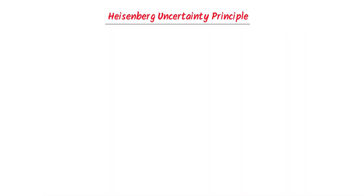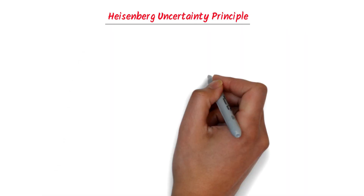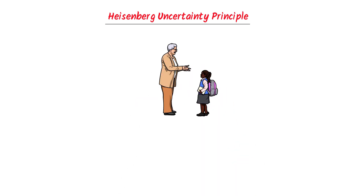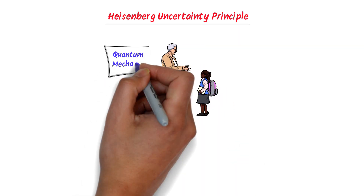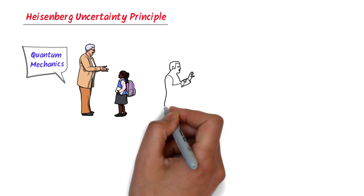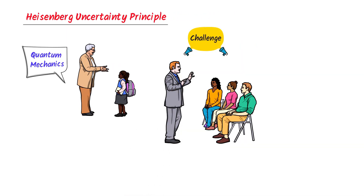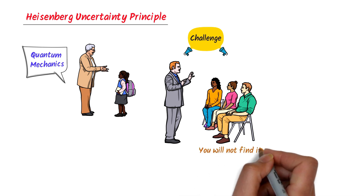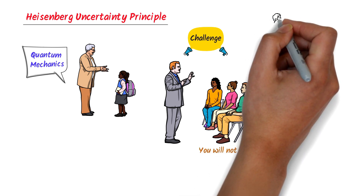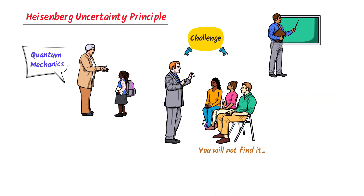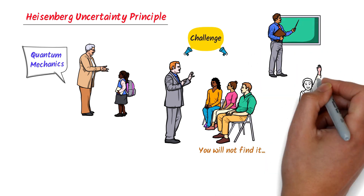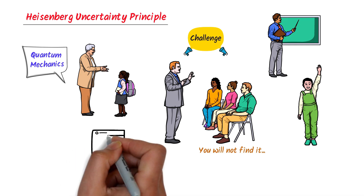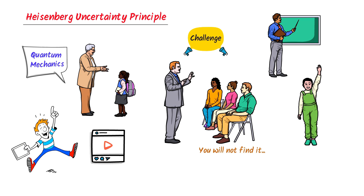Hassenberg Uncertainty Principle. To learn the Hassenberg Uncertainty Principle, we have to learn some very basic concepts of quantum mechanics, which will make things super easy. I challenge you that whatever you learn here about Hassenberg Uncertainty Principle will be so easy. I will break this concept into small chunks so that below average students can learn it. After watching this lecture completely, you will learn Hassenberg Uncertainty Principle in a very simple way.